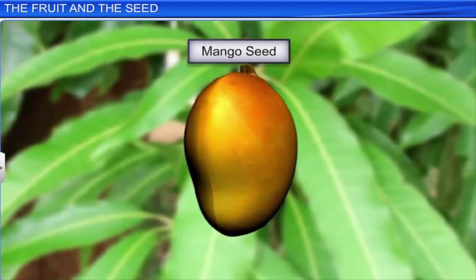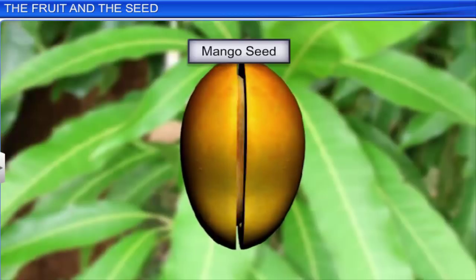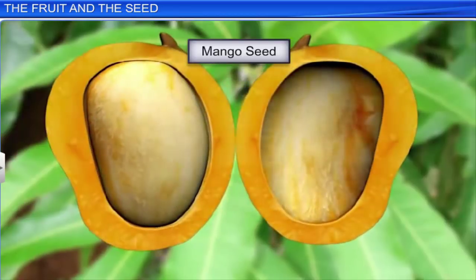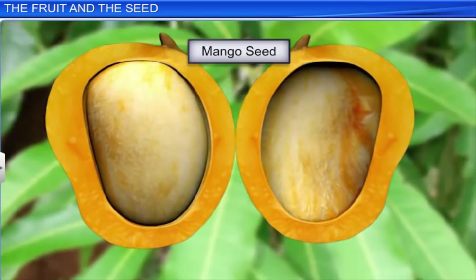Thus, seeds are formed from the ovules and help in reproduction, while a fruit is formed from the ovary and is the characteristic feature of flowering plants.